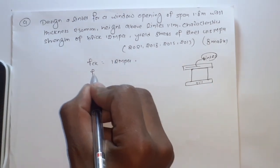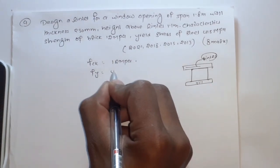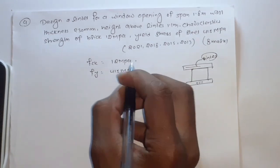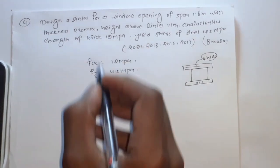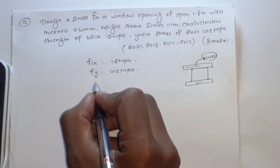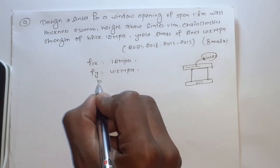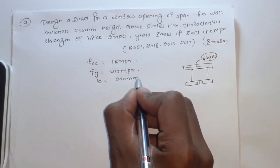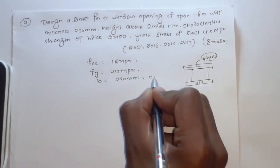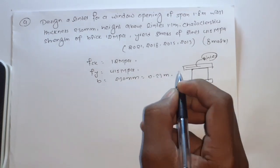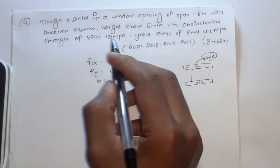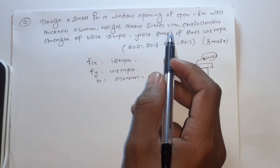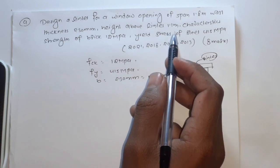The question involves a steel stress of 415 MPa. The thickness of the wall is 230 mm, which is 0.23 meters. The height above the lintel is 1.1 meters.